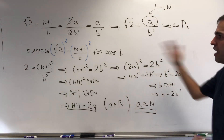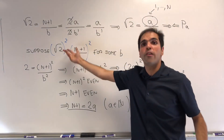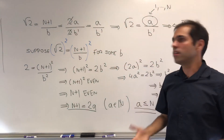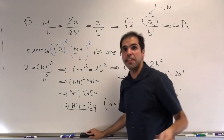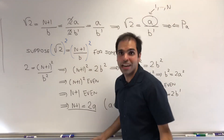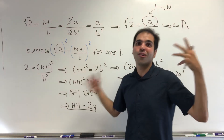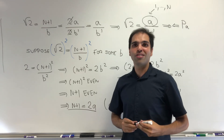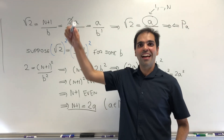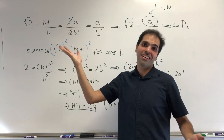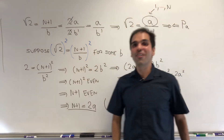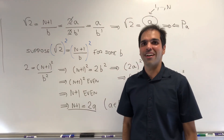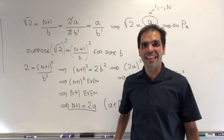Therefore, we have shown that square root of 2 cannot be written in the form n+1 over something, and therefore Pn+1 is true, and therefore Pn is true for all n, and therefore square root of 2 is irrational. I hope you liked this. If you want to see more math, please make sure to subscribe to my channel. Thank you very much.